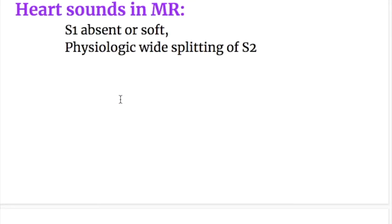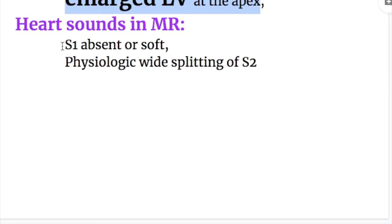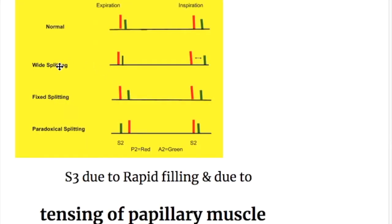Heart sounds in mitral regurgitation: S1, the first heart sound, is absent or soft, whereas in mitral stenosis S1 was accentuated. There is physiologic wide splitting of the second heart sound — wide splitting occurring in inspiration only, not in expiration, hence physiological.